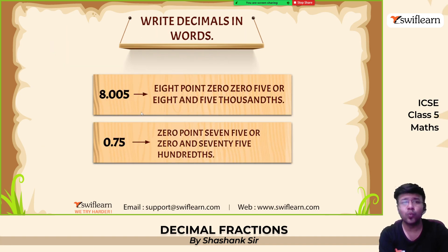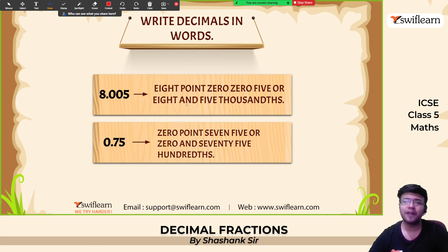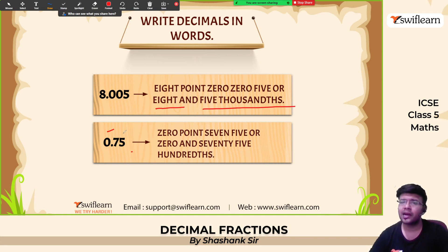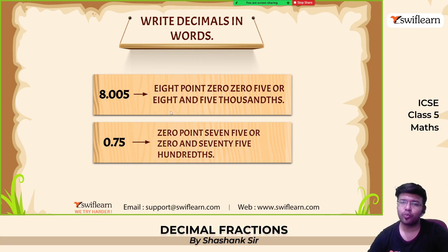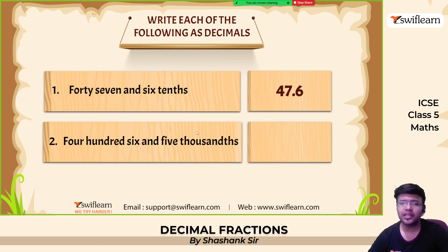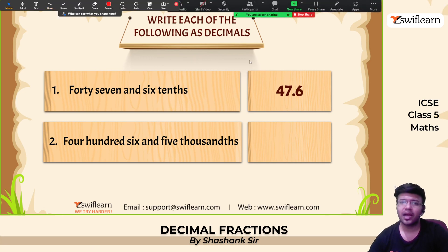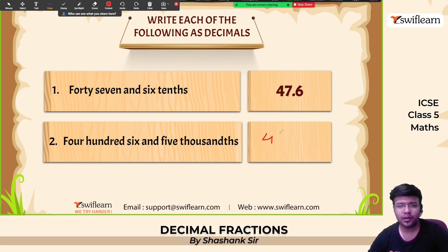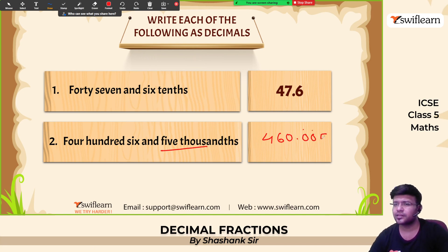Now, write in words. For example, 8.005 is written as 'eight and five thousandths.' 0.75 is written as 'zero and seventy-five hundredths.' 47.6 is written as 'forty-seven and six tenths.' 460.005 is written as 'four hundred sixty and five thousandths.' These are the answers.